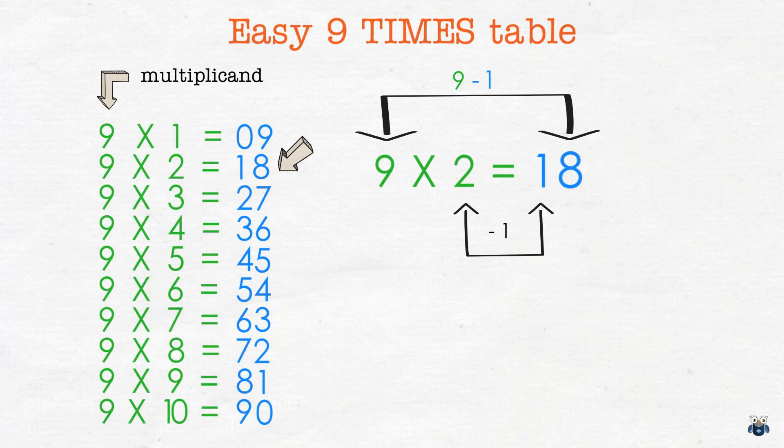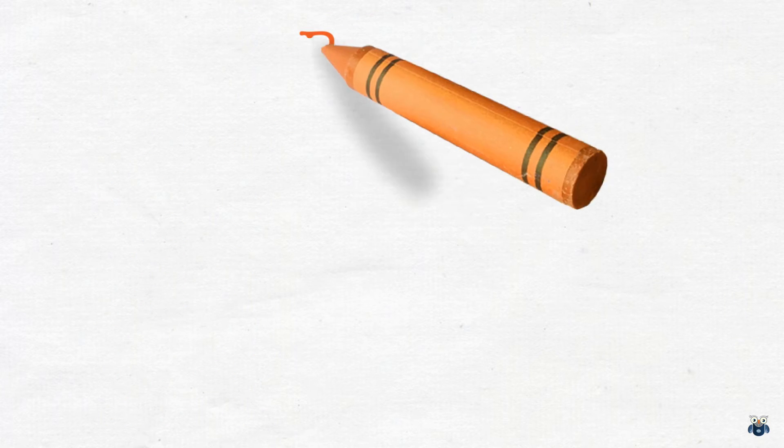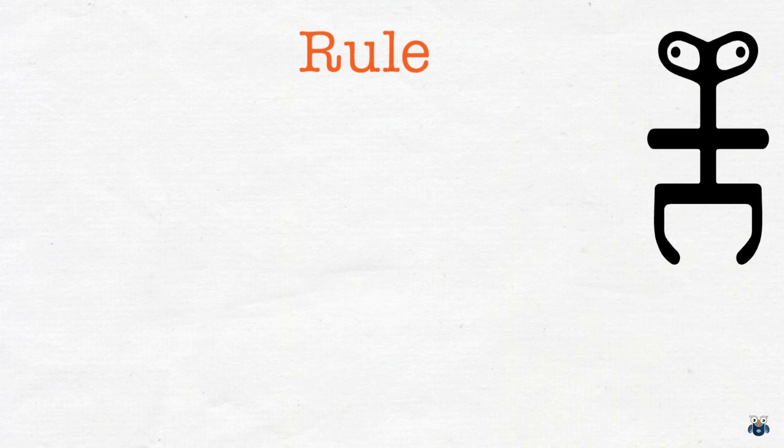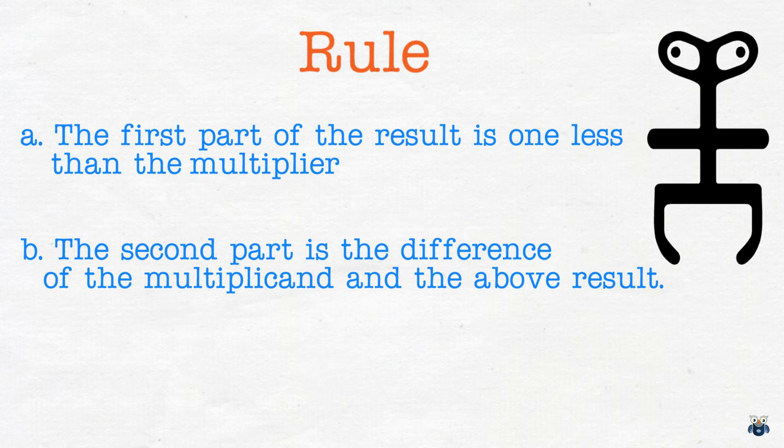Why don't you pause the video and see if this pattern applies to a few of the remaining 9 times table results. The pattern fits doesn't it? So let's write down the pattern we have just seen. The first part of our result is 1 less than the multiplier. The second part is the difference of the multiplicand and the above result.